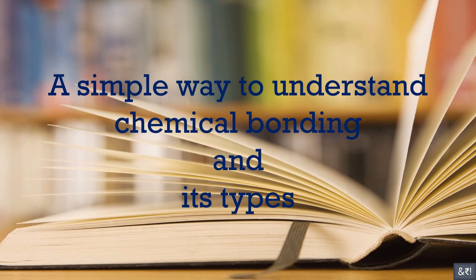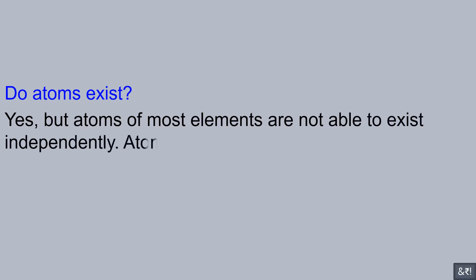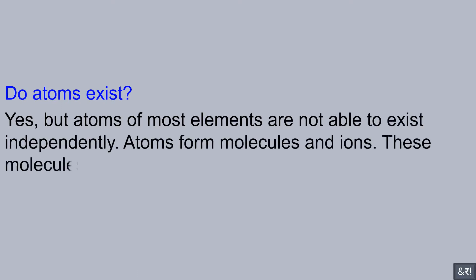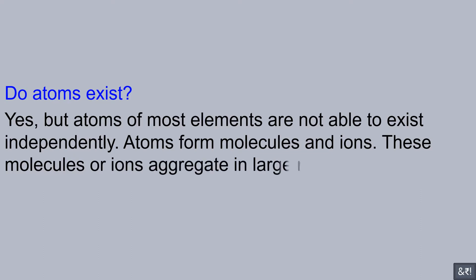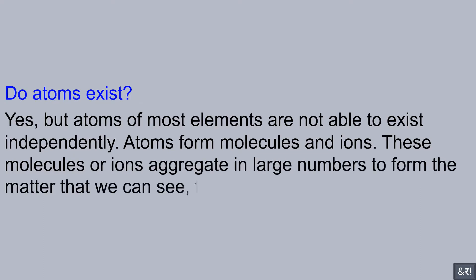A simple way to understand chemical bonding and its types. Do atoms exist? Yes, but atoms of most elements are not able to exist independently. Atoms form molecules and ions. These molecules or ions aggregate in large numbers to form the matter that we can see, feel or touch.